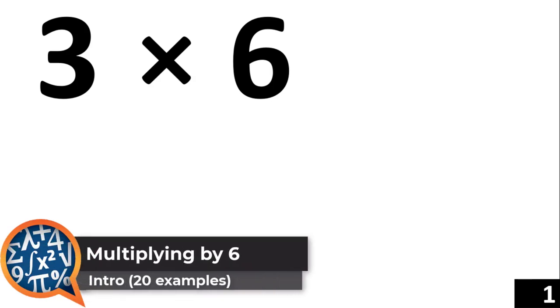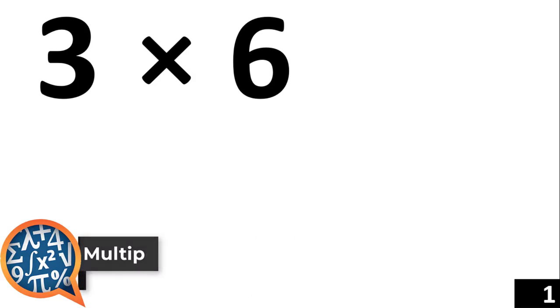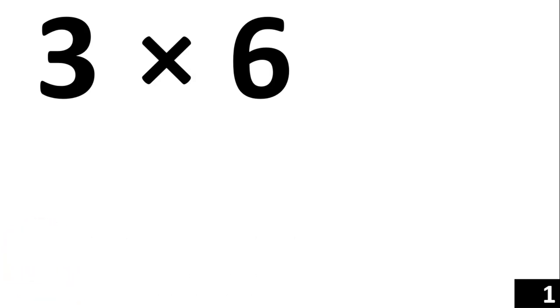In this video, we are going to take a look at the 8th multiplication rule, and that's multiplying anything times the number 6. Using the distributive property, the key is recognizing that 6 is the same thing as 5 plus 1.